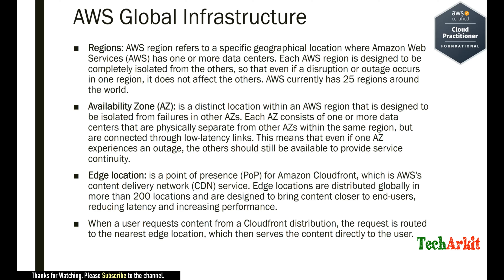There are also edge locations. An edge location is a point of presence of Amazon CloudFront, which is AWS's content delivery network service. These are not availability zones or regional services — they are separate, smaller data centers used to cache data. Edge locations are distributed globally in more than 200 locations and are designed to bring content closer to end users, reducing latency and increasing performance.